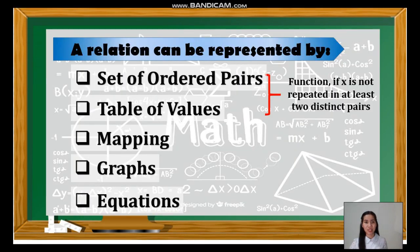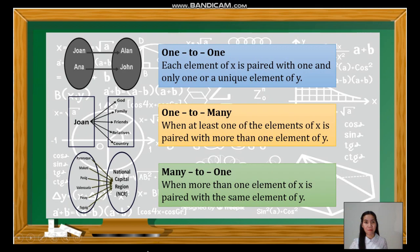Another way to represent a relation is using mapping. In mapping, it is a function if it is one-to-one or many-to-one. There are three kinds of mapping. We have one-to-one, wherein every x is paired with one y. We have one-to-many, wherein one x is paired with many values of y. We also have many-to-one, where many x values are paired with one y. In all of these three, one-to-many violates the idea of a function. Therefore, one-to-many is not a function, while one-to-one and many-to-one are both functions.